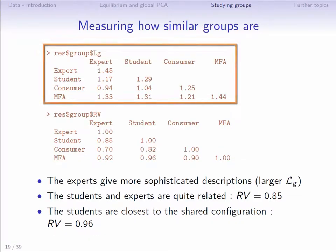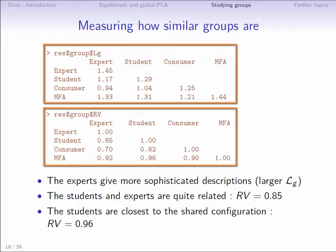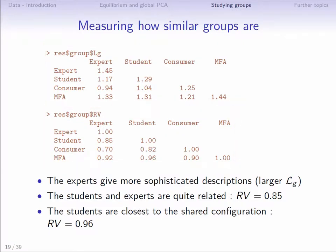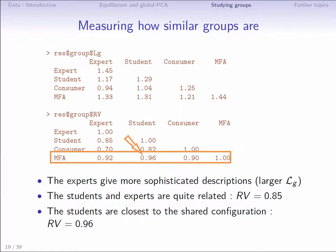Coming back to our example, the LG and the RV between the groups are as follows — shown here as the lower diagonal terms since the matrix is symmetric. From the LG, it can be seen that the expert jury gives a more multidimensional and richer description of the wines than the other juries. Looking at the RV coefficients, the student and expert juries are close to each other with an RV of 0.85. We can also consider the mean configuration of the MFA — a group corresponding to the set of coordinates of the individuals on all dimensions. The student jury has a configuration very close to the mean one, with an RV close to 1 at 0.96.